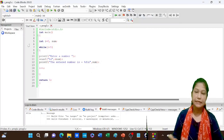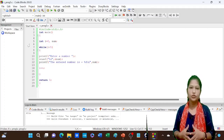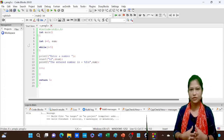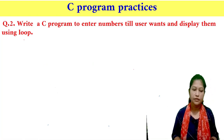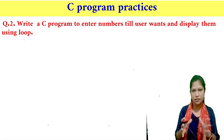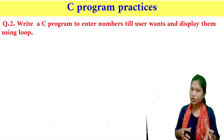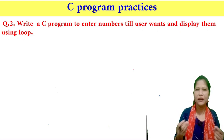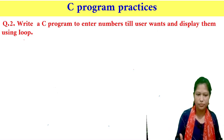Now the next program: write a C program to enter numbers till the user wants and display them using a loop. Here, instead of a fixed count of 5, the user chooses how many times to enter — for example 20 times or 25 times. This is a user-choice approach.